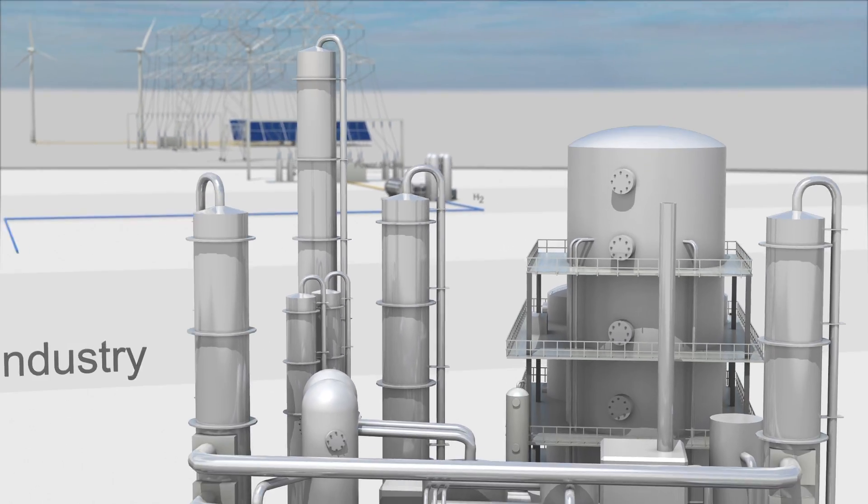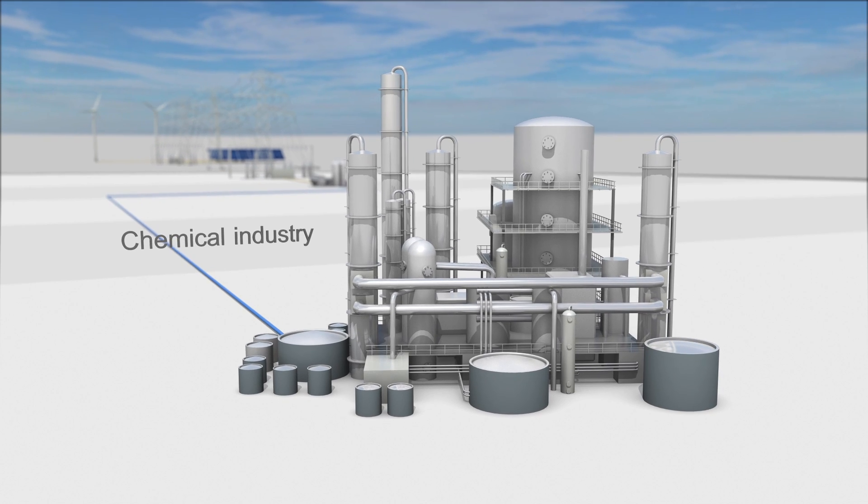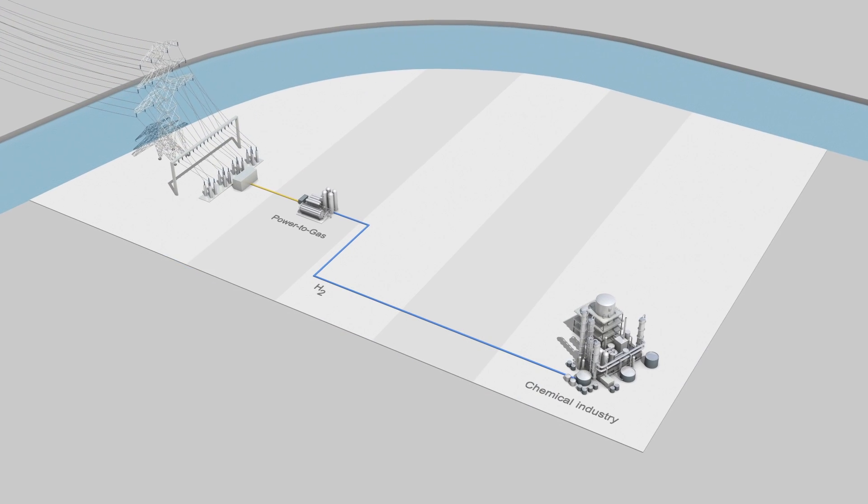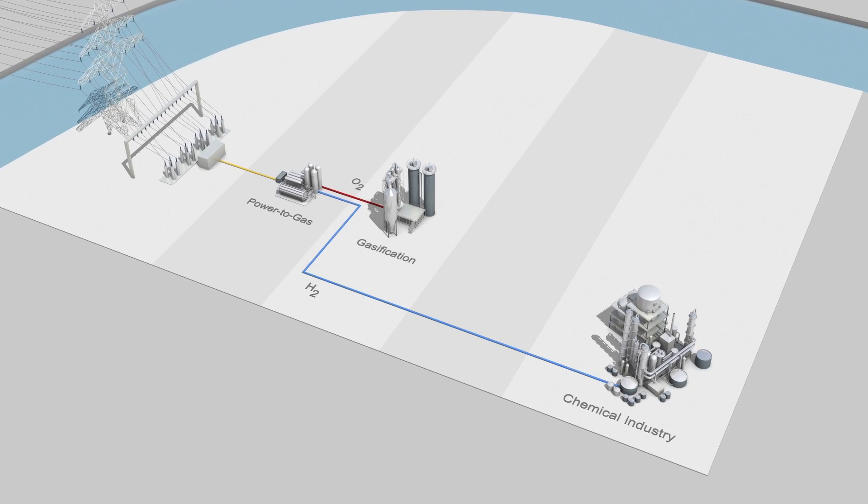Hydrogen finds its way to the chemical industry, where it is a widely used chemical feedstock. The oxygen, however, is an important ingredient in the next step of the value chain, gasification of biomass.